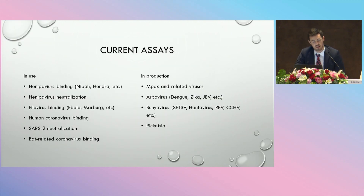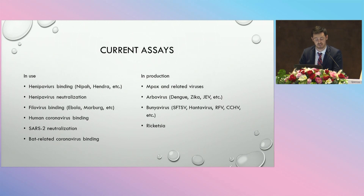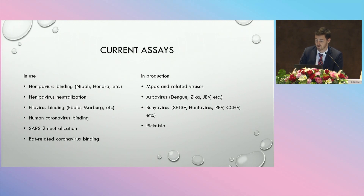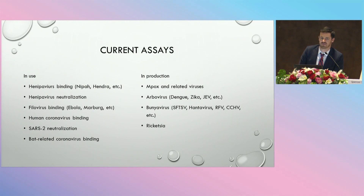Currently, we have in use a Henipavirus binding assay, a Henipavirus neutralization assay, a filovirus binding assay, and the human and SARS-CoV-2 coronavirus binding assays just presented. We also have a bat-related coronavirus binding assay, and we are working on producing an mpox and related poxvirus assay, an arbovirus assay, a bunyavirus assay, and a rickettsia assay. That's all I have for today, and I welcome any questions.